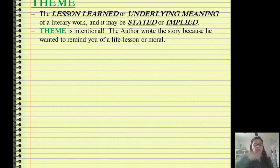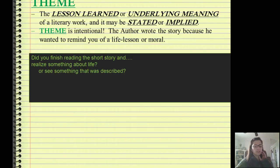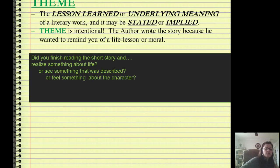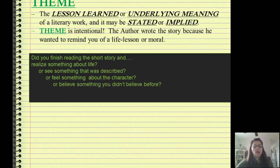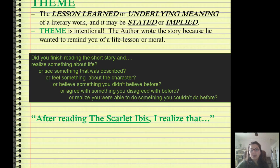Next we have theme, which is the lesson learned or underlying meaning of a literary work. It may be stated or implied, and it is intentional — the author made a decision. After reading something, you can say to yourself: I realized something about life, or I believe something now that I didn't before, or I agree with something I disagreed with before. After reading The Scarlet Ibis, for example, we realized that we should probably be nicer to the people we love, or that sometimes people are cruel to those they love. That's the theme.